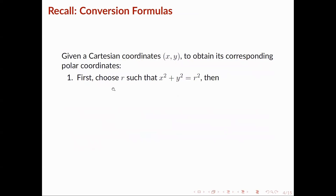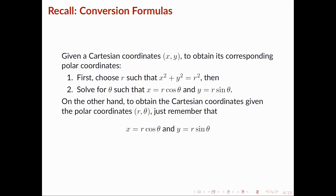We also have some conversion formulas. Given the Cartesian coordinates (x, y) to obtain its corresponding polar coordinates, we first choose R such that it satisfies x² + y² = R². Then we solve for theta such that x = R cos(theta) and y = R sin(theta). On the other hand, if we are to obtain the Cartesian coordinates given the polar coordinates (R, theta), we just substitute R and theta into x = R cos(theta) and y = R sin(theta) to get the x and y coordinates of the point.